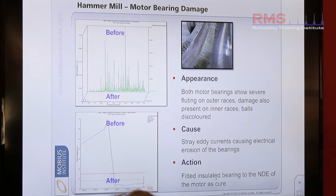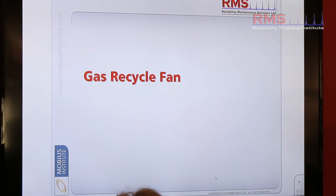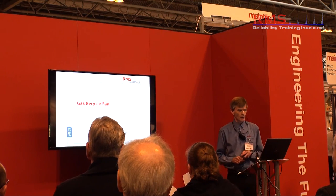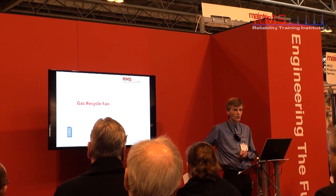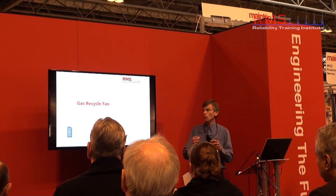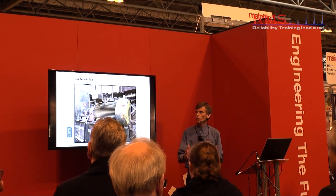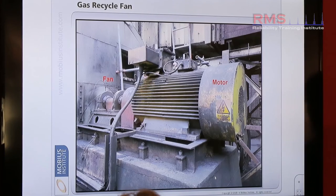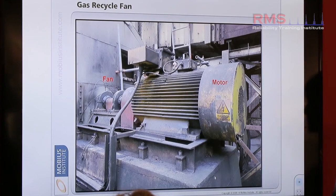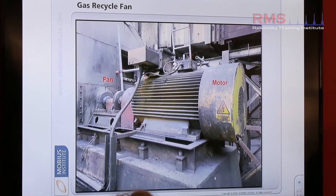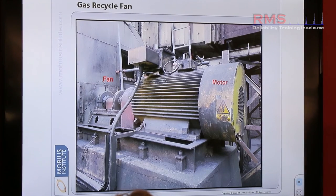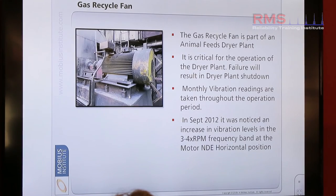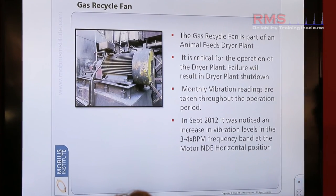So I've got maybe time for one more. This problem is maybe not quite as common on general plant, but on certainly larger drivers it has a place where it could occur. This is a motor driving a centrifugal fan — a gas recycle fan. You've got your motor with your two plummer block cooper bearings, and your coupling is just under this guard. This machine has been trended periodically since 1999 on a monthly basis when the plant runs during their operational season.